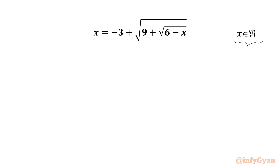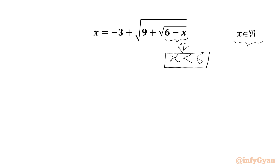We can write our first condition from this radicand only. 6 minus x should be positive, so we can write x should be less than 6. Once x is greater than 6, we will get the radicand negative, and the square root of a negative number will lead to complex solutions. So the first condition is x should be less than 6.